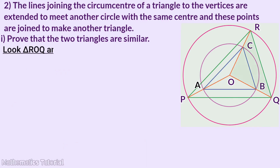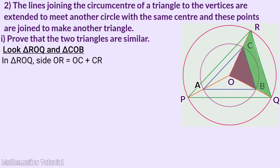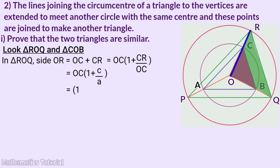Triangle ROQ and triangle COB: triangle ROQ side OR equals OC plus CR. OC is equal to OC into 1 plus CR by OC. CR is equal to C and OC is equal to A. So this becomes OC into 1 plus C by A.